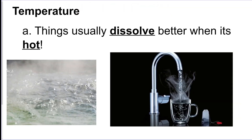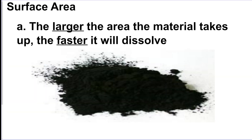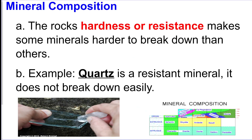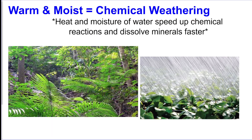Chemical weathering includes oxidation — rusting, which produces a new substance. Temperature matters: things dissolve faster when hotter. Increasing surface area by crushing something makes it dissolve faster. Mineral composition affects breakdown rate — harder minerals like quartz take longer. A warm and moist environment gives you the most chemical weathering.